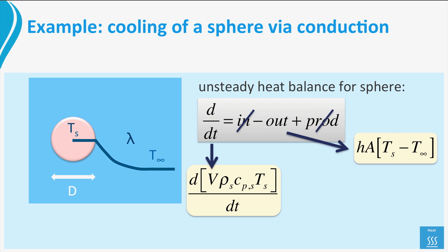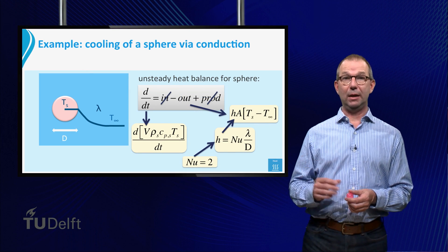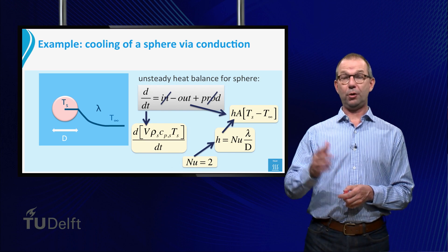Finally, we consider the outflow, which is non-zero. The sphere is cooling down. We start by describing this via Newton's cooling law. The next step is to further specify the heat transfer coefficient h and connect it to Nusselt. Finally, for this situation, a sphere cooling down via conduction, we can use Nusselt is 2. In principle, this has only been shown to be adequate for steady state situations. However, it turns out that pretty quickly after the start of the cooling process, Nusselt is 2 also holds for further cooling of the sphere.